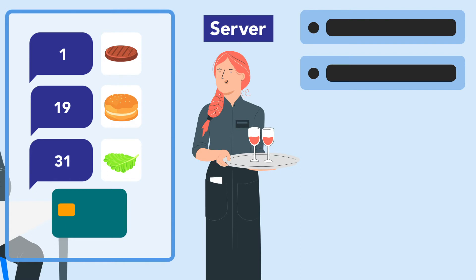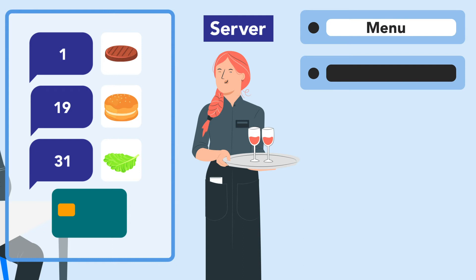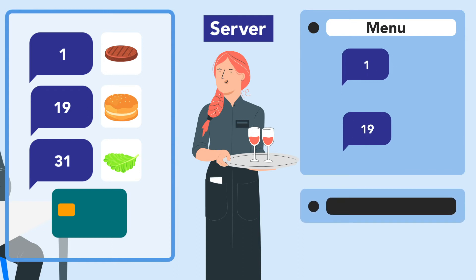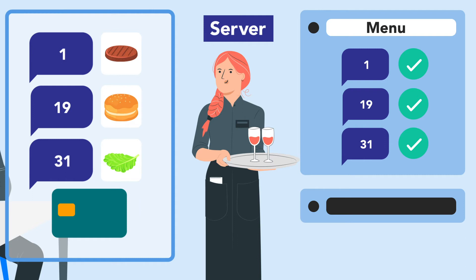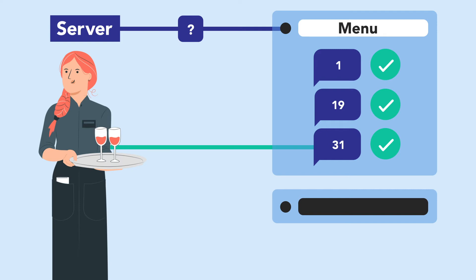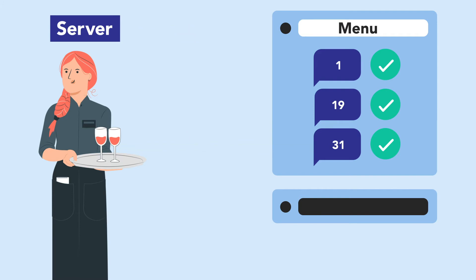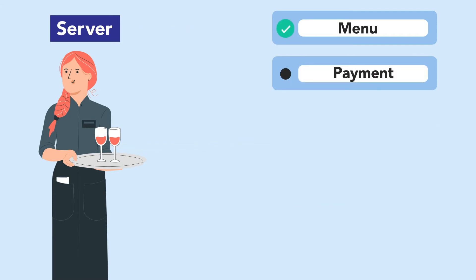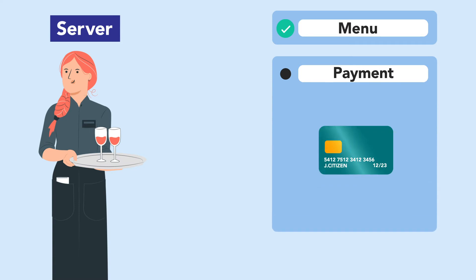The first check they need to run is to look at the menu. They need to know if the numbers I've ordered actually correspond with the items they have for sale. So they take a little look at the menu, check each item, and say yeah, we have those items. You could imagine that the server is asking the menu if these numbers correspond to items, and the menu is saying back to the server, yeah, we have those items.